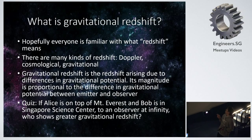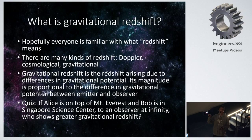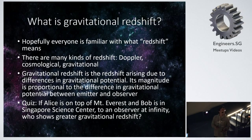If Alice is on top of Mount Everest and Bob is in the Singapore Science Center, for an observer at infinity, who shows greater gravitational redshift? This requires only high school physics. For an observer at infinity, you are at zero potential, and the formula for gravitational potential is minus GMm over r. Bob at the Science Center is closer to the center of the earth, so he is at lower potential and Alice is at higher potential. For someone at infinity, Alice will have less gravitational redshift and Bob will have higher gravitational redshift.